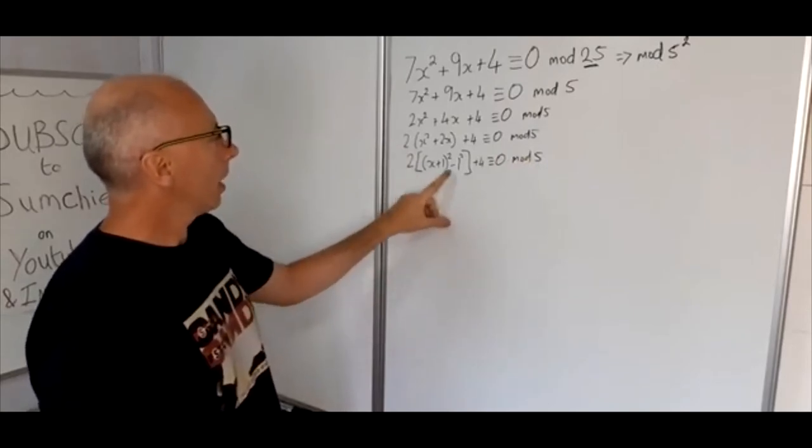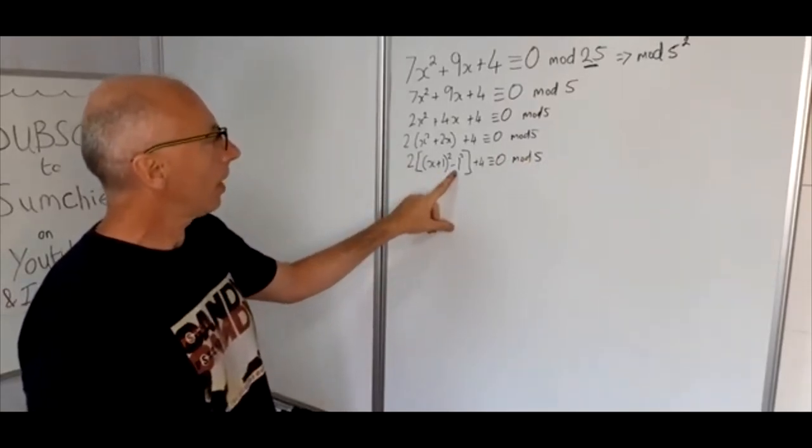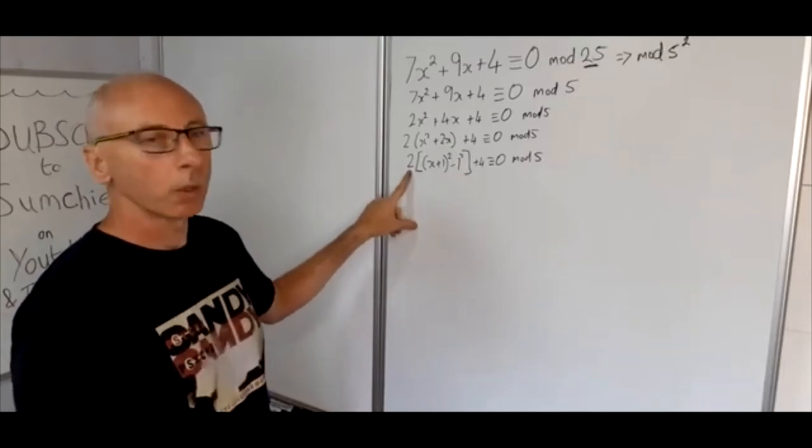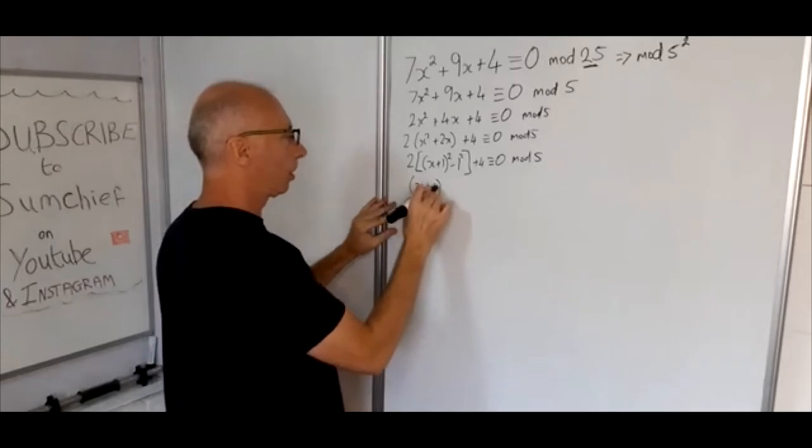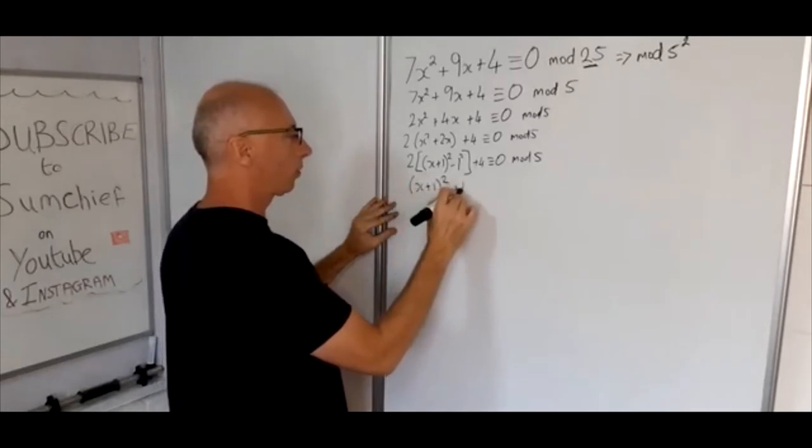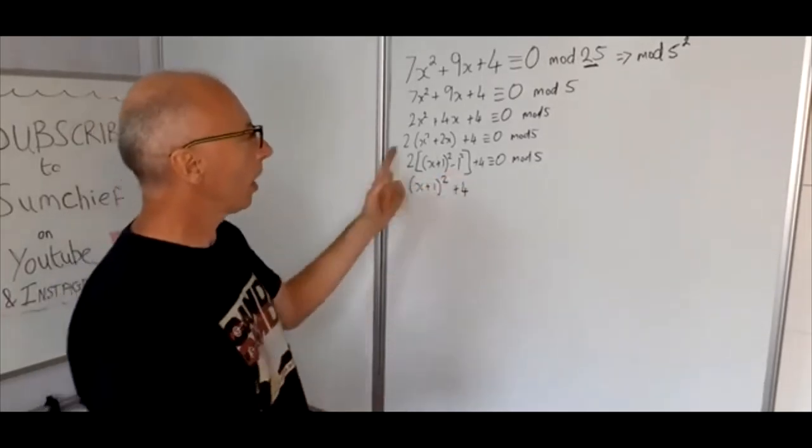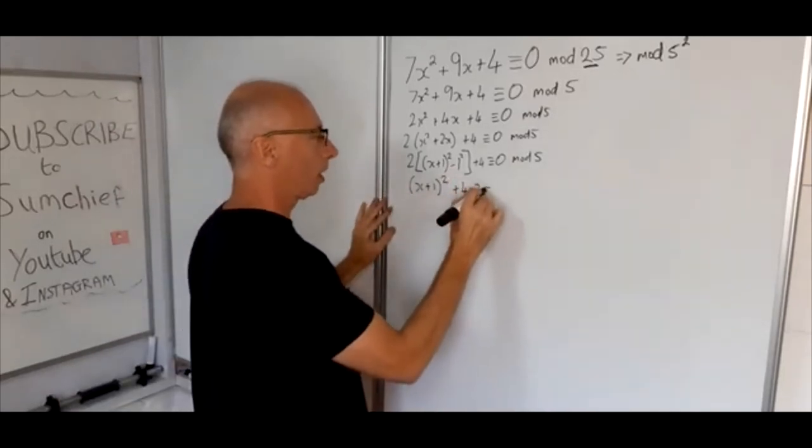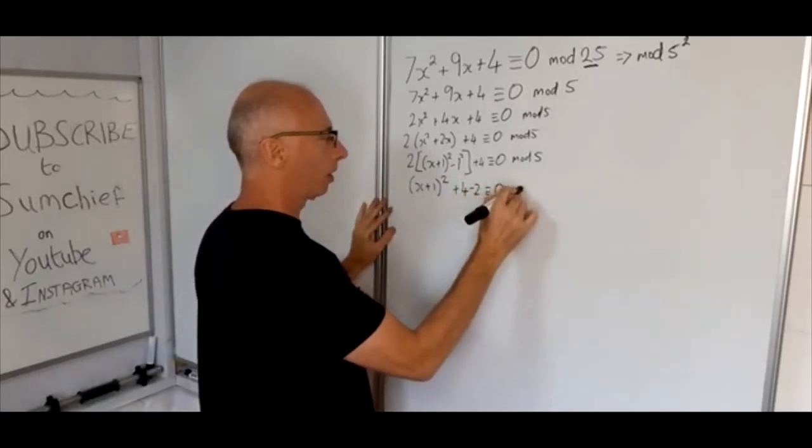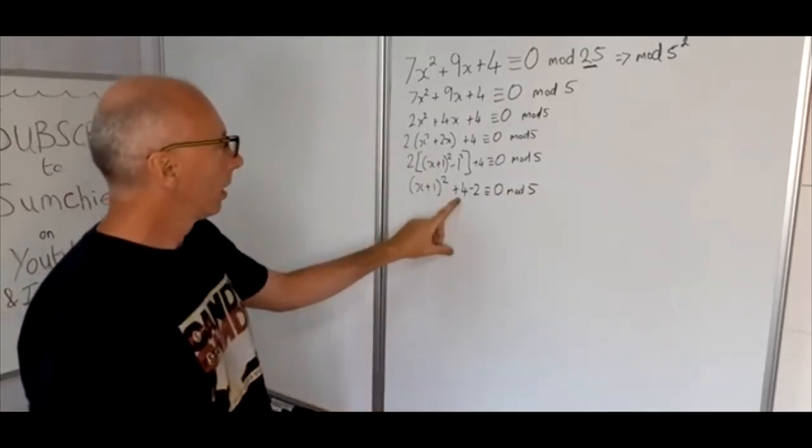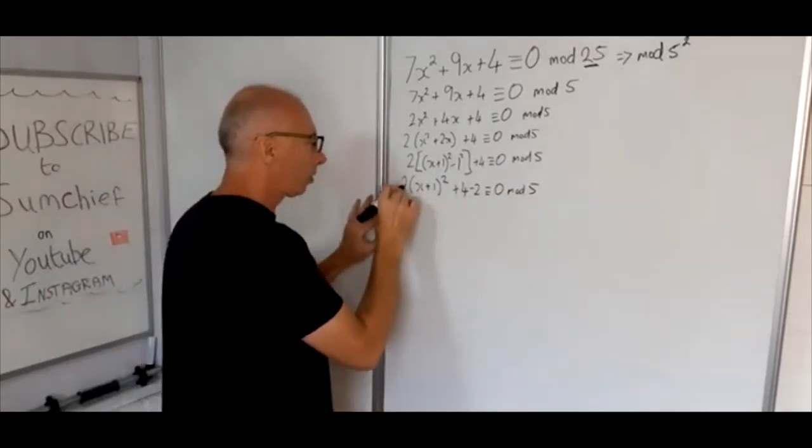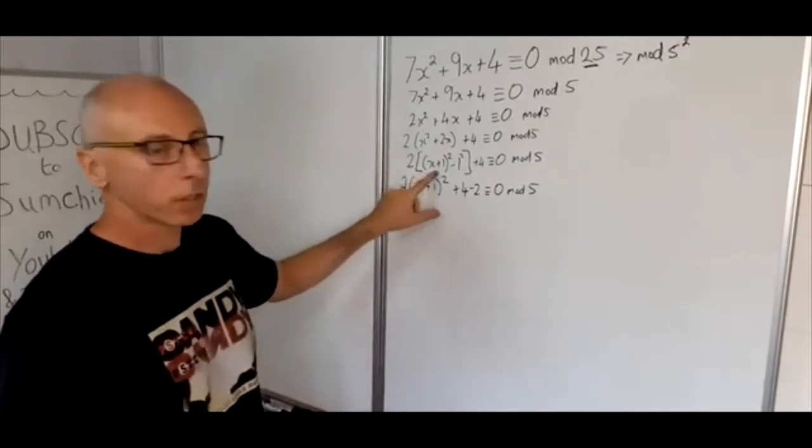Let's get this minus 1 out of here. Remember there's a multiple here of 2. So now we're up to 2(x plus 1) squared plus 4 and then 2 times minus 1 squared is minus 2, and that's congruent with 0 mod 5. We need to leave the 2 in front of the (x plus 1) squared.